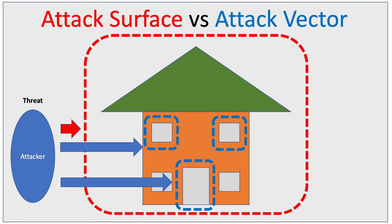An example here: an attack surface could be all the ports that are open on a server. So, the attack surface would be the server, and the attack vectors could be, for example, the specific ports that incoming connections are allowed on. And that summarizes the difference between attack surface and attack vector. Thank you.